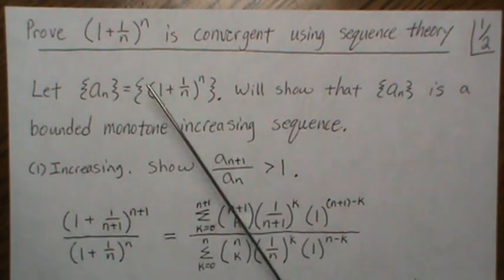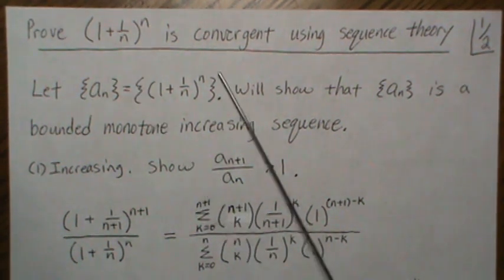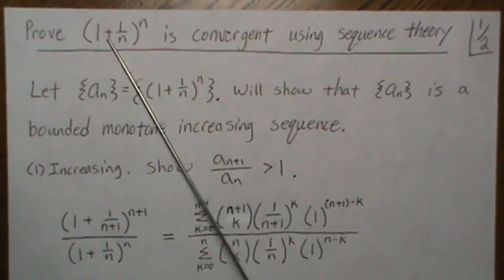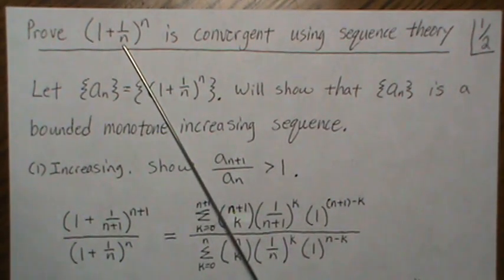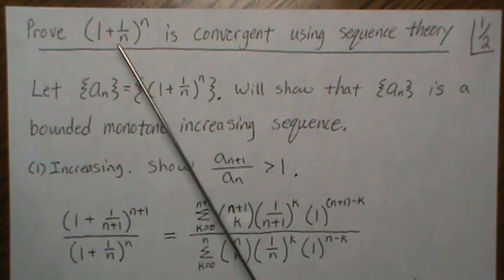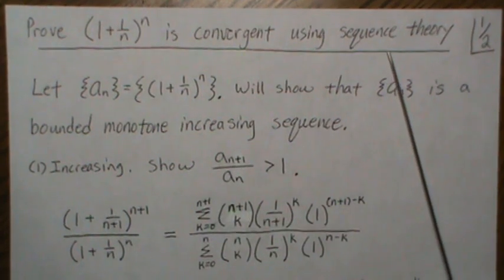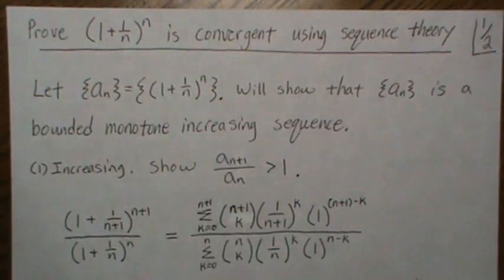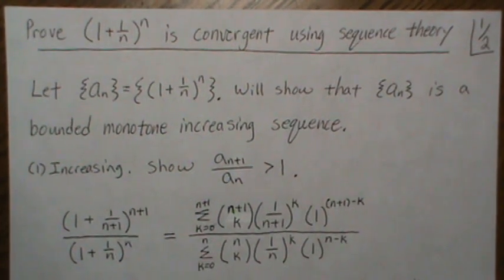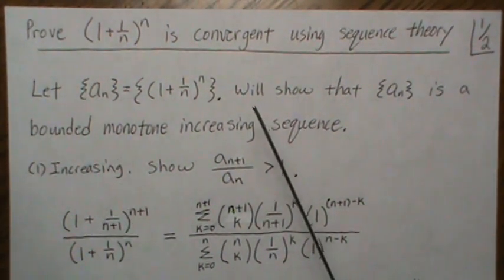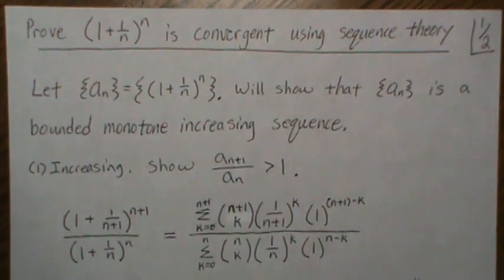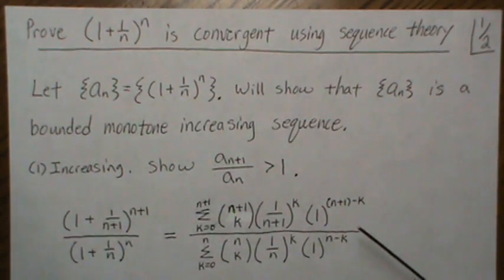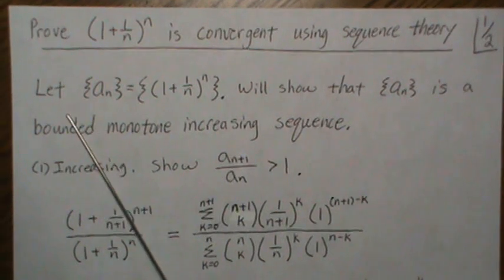In this video we're going to show that the quantity (1+1/n)^n is convergent using sequence theory. We know that as n goes to infinity this limits to e, which is 2.7-something, but we're just going to use sequence theory to show that the limit exists and that it lies between two numbers. We're not going to prove it equals e, but the steps we use are good tools to have in your mathematical toolbag.